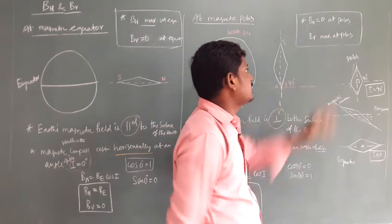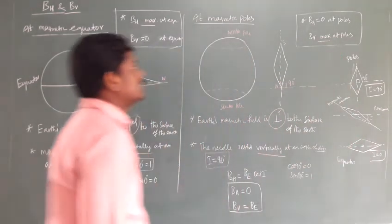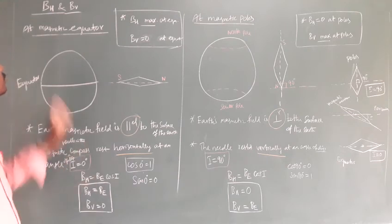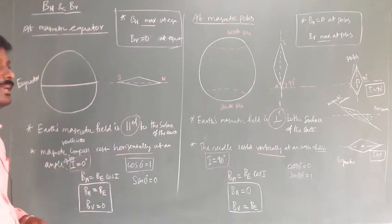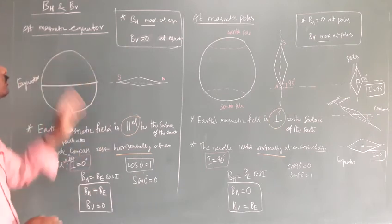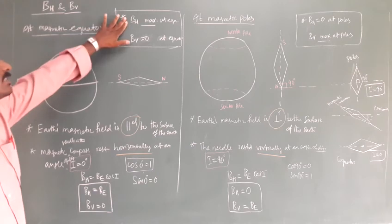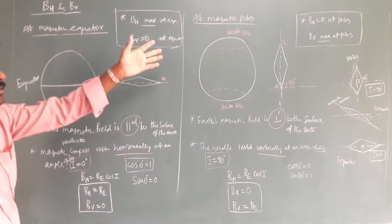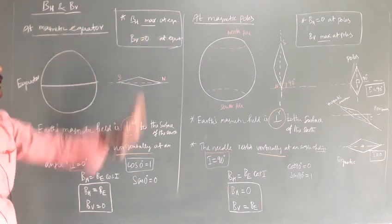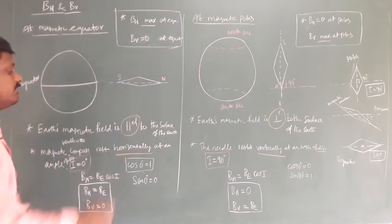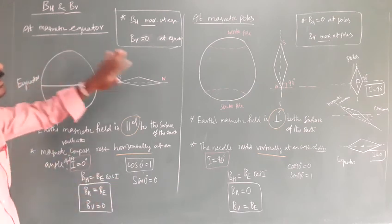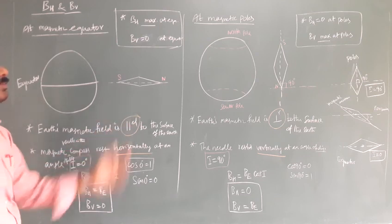The vertical component is maximum at the poles. To summarize: at the equator, BH is maximum and BV is 0, with the angle of inclination I equal to 0. At the poles, the vertical component is maximum and the horizontal component is 0, with I equal to 90 degrees.